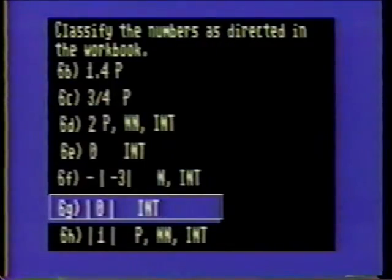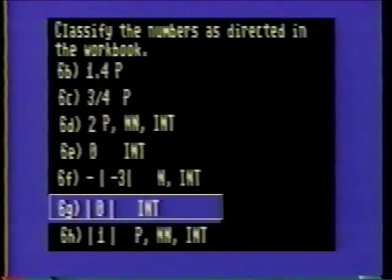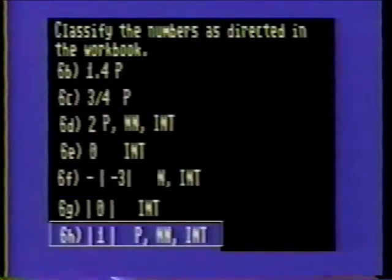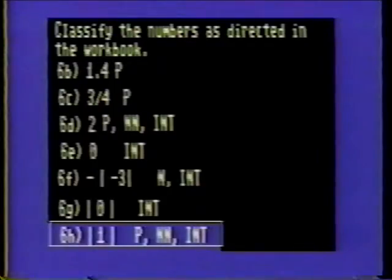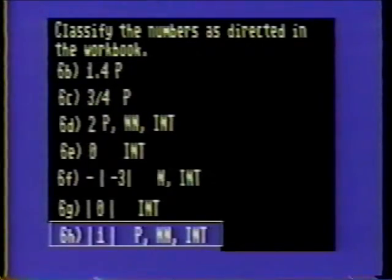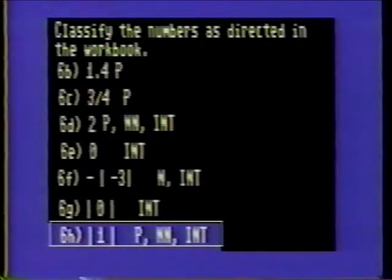Problem 6G: The absolute value of 0 is 0. 0 is an integer. Problem 6H: The absolute value of 1 is 1. 1 is a positive number, a natural number, and an integer.